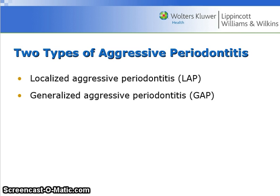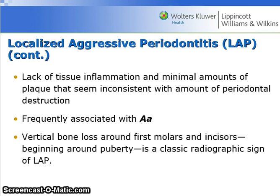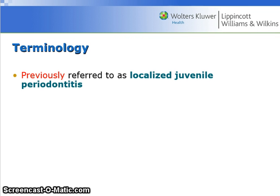There are two types of aggressive periodontitis: localized, or LAP, and generalized, or GAP. LAP has an onset of disease around puberty and exhibits localized rapid tissue destruction around permanent first molars and/or incisors. It involves no more than two teeth other than first molars and incisors. Lack of tissue inflammation and minimal amounts of plaque seem inconsistent with the amount of periodontal destruction. It is frequently associated with AA. Vertical bone loss around first molars and incisors beginning around puberty is a classic radiographic sign of LAP. LAP was previously referred to as localized juvenile periodontitis.